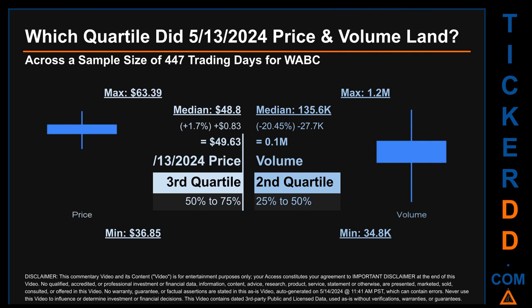Hello, my name is Maria. Which quartile did May 13, 2024 price and volume land in across a sample size of 447 trading days? The maximum end of day price for WABC was $63.39 while the minimum was $36.85. Within that price range, May 13, 2024 price of $49.63 landed within the third quartile, placing it within the 50 to 75 percent range of all sampled end of day prices. The day's volume landed within the second quartile, that is within the 25 to 50 percent range of all sampled daily volume, which saw a max daily volume of 1.2 million and a minimum of 34,800. Quartiles tell us about the spread of a data set by breaking it into quarters, just like how the median breaks the set into half.